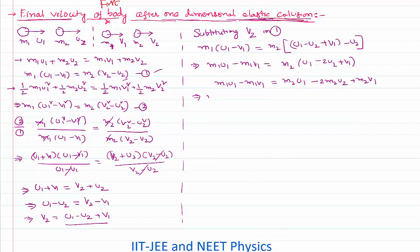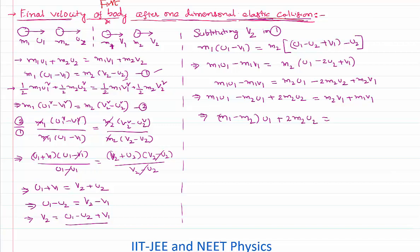Moving m1 v1 to the right and m2 u1 and minus 2 m2 u2 to the left gives: m1 u1 minus m2 u1 plus 2 m2 u2 equals m2 v1 plus m1 v1. Simplifying: (m1 minus m2) u1 plus 2 m2 u2 equals (m1 plus m2) v1. Dividing both sides by (m1 plus m2) gives the final result: v1 equals (m1 minus m2)/(m1 plus m2) times u1 plus 2m2/(m1 plus m2) times u2.